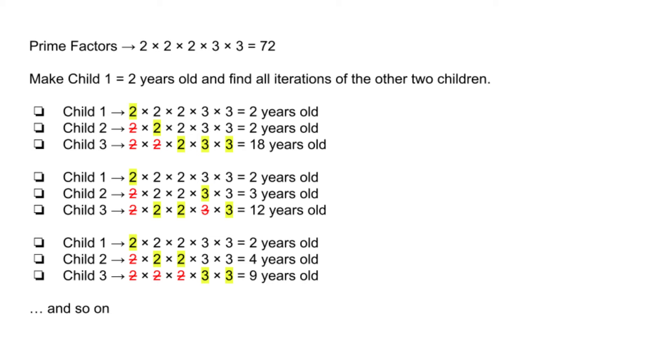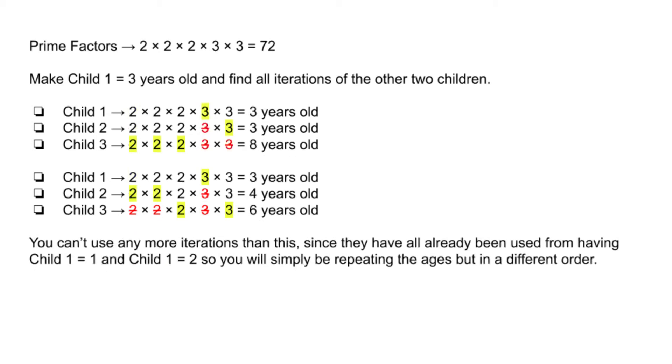We simply have to follow the same steps from the previous example, and if you require more time to understand, you can simply pause the video and go through the examples and explanations at your own pace. Last but not least, we will make child 1 fixed to a 3-year-old, and figure out all the possible combinations of child 2 and child 3. Child 1 equal to 3 is as far as we can go, since 3 is the largest number from our list of prime numbers, and therefore, we should now have all possible combinations of ages for all 3 children with no duplicates.